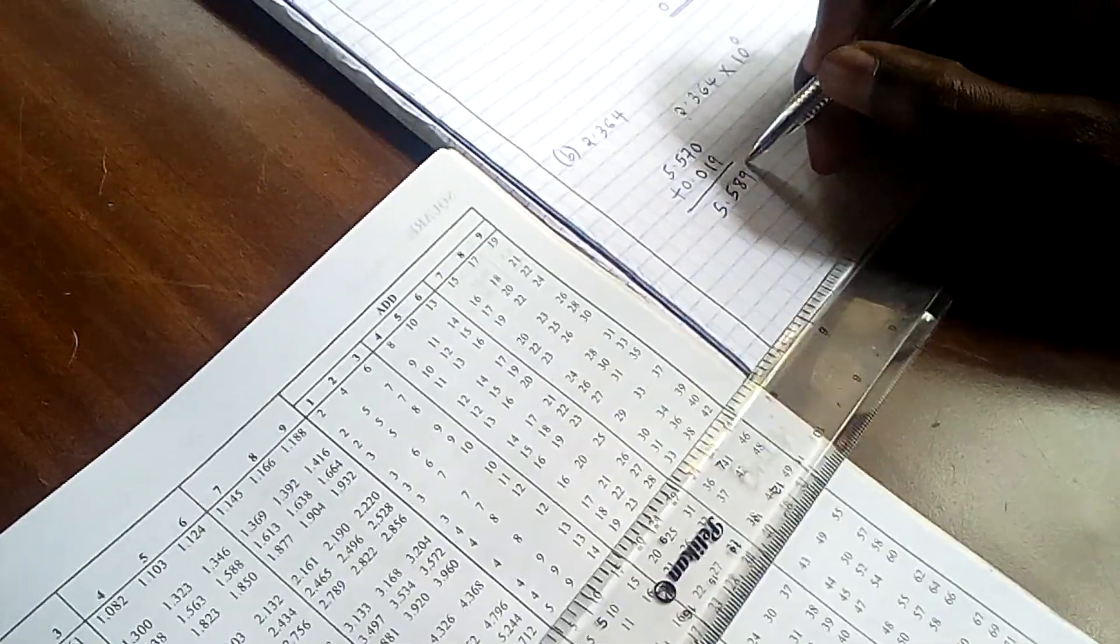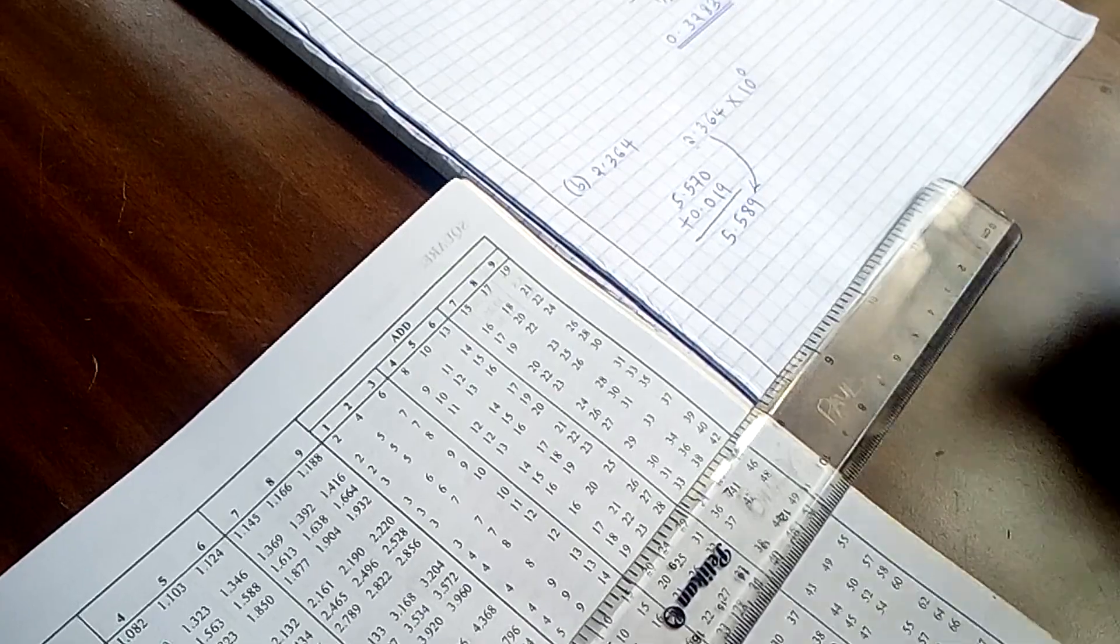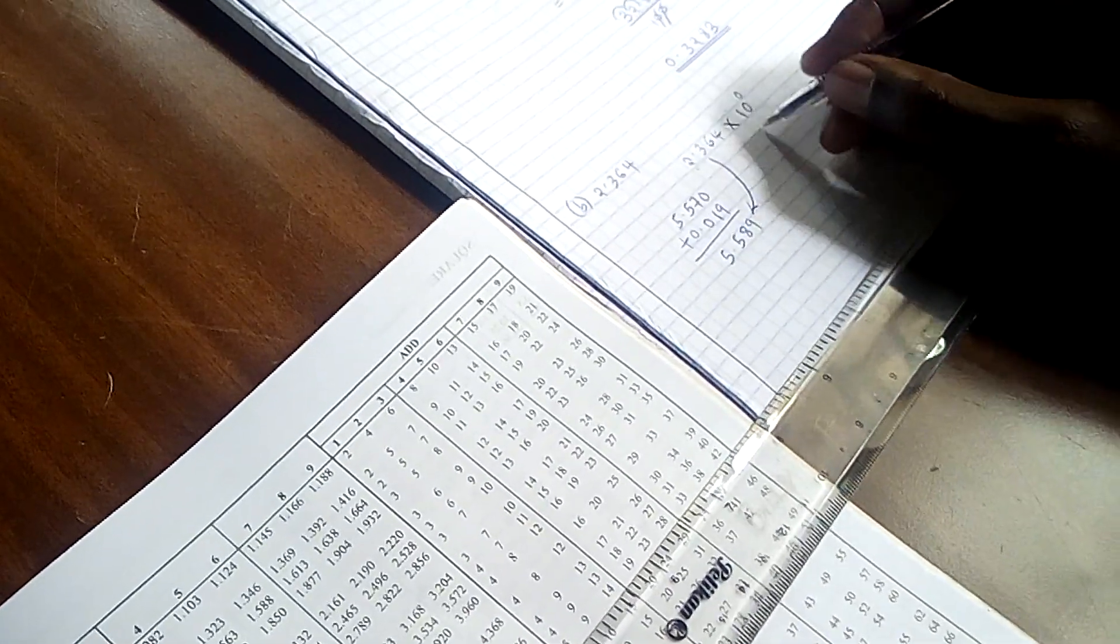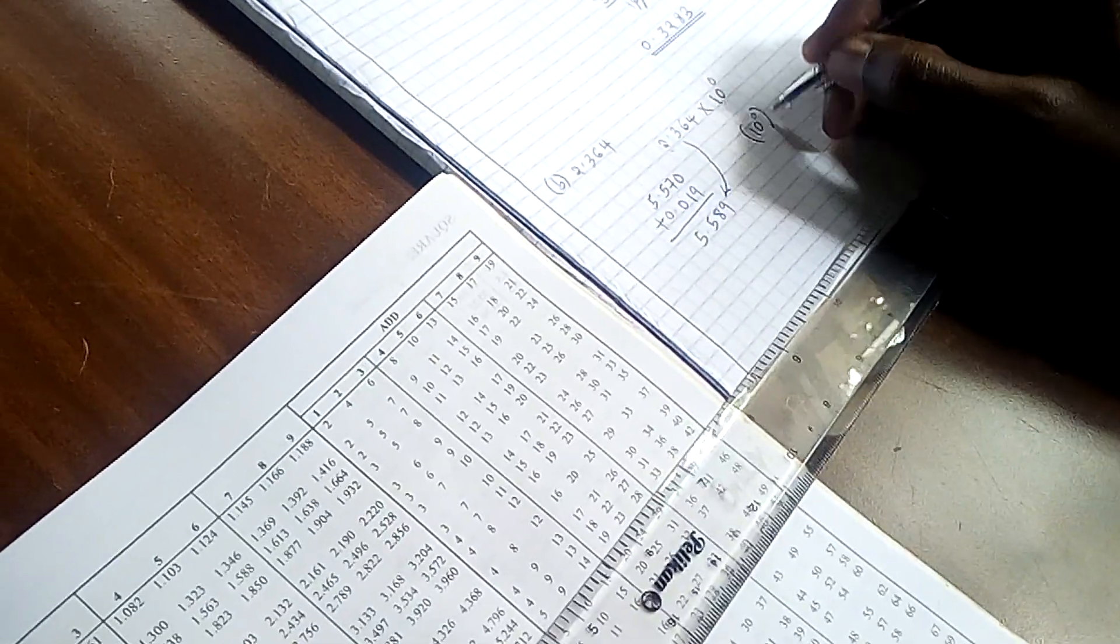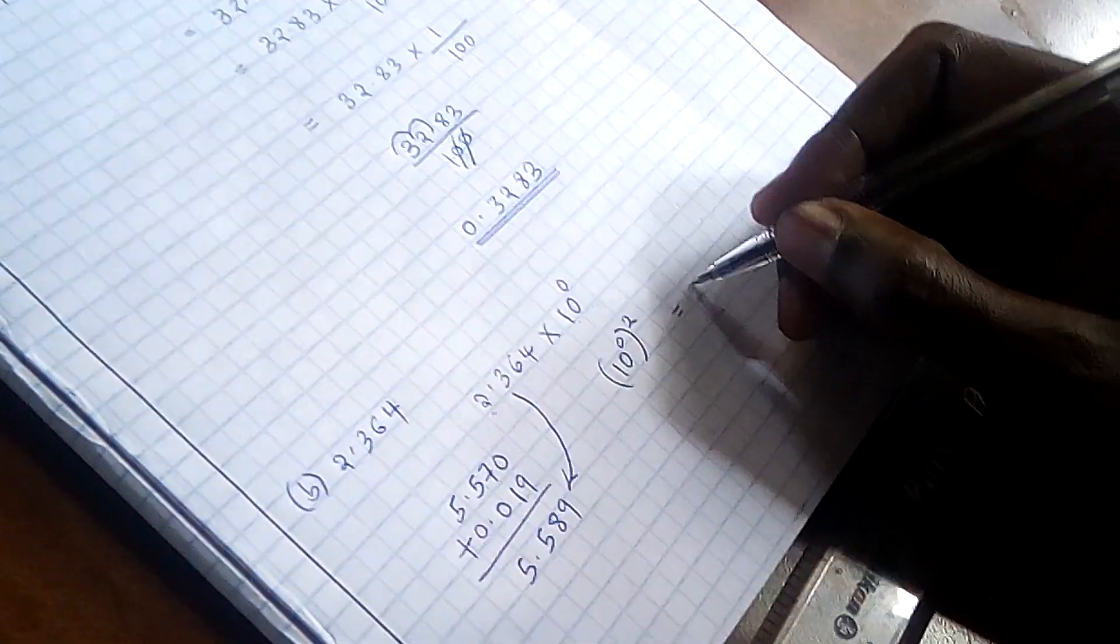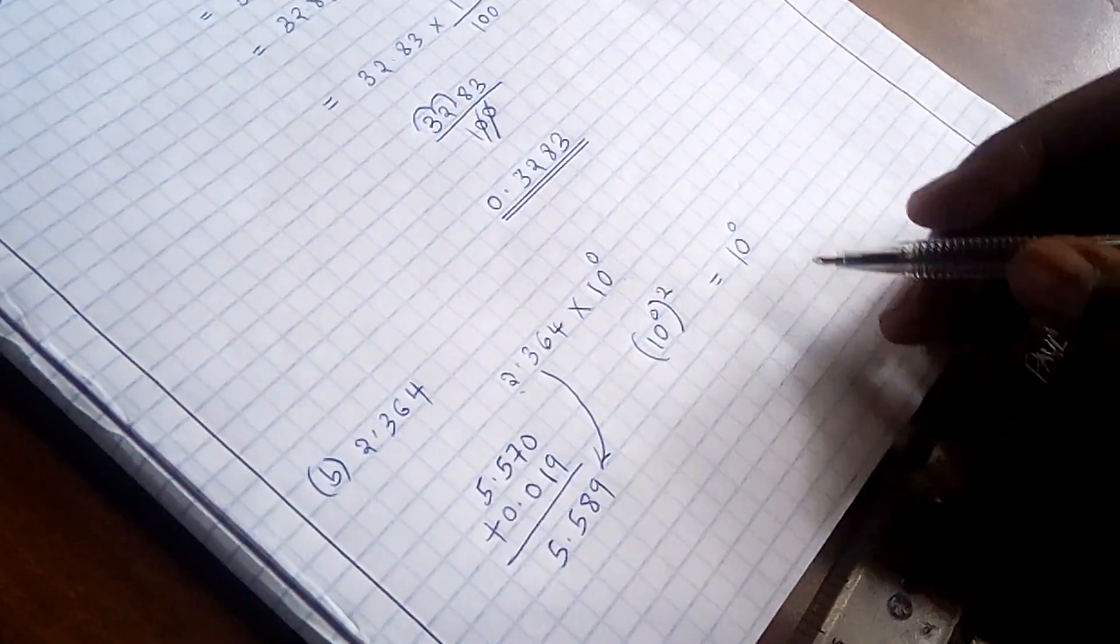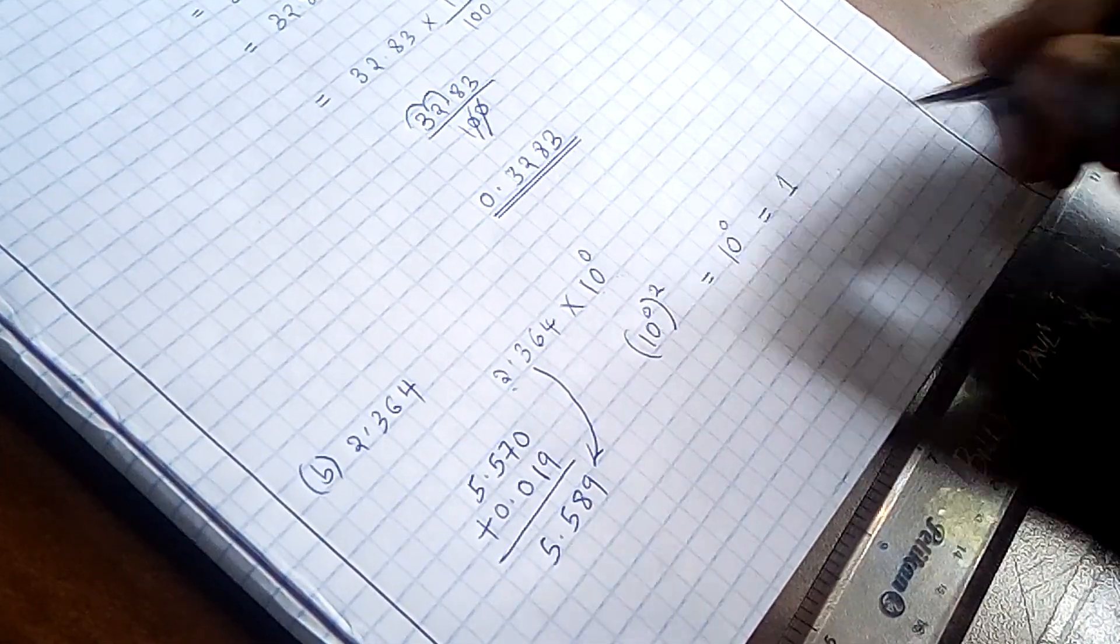This becomes the square of that number. Then 10 raised to the power 0, if we square it, this is similar to having 10 to the power 0 times 2, which is just 0. And 10 raised to the power 0 is just 1.